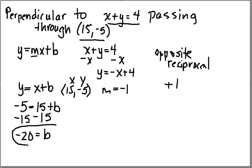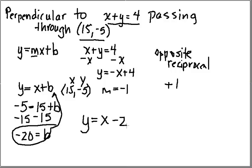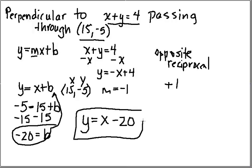For my last step, I take my b and plug it back into the equation to write the equation of the final line, which is y equals x minus 20. That is my new perpendicular line.